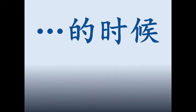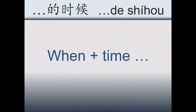This is HSK 2, lesson number 4, grammar point number 2. We're going to study the 的时候 expression in Chinese. When we are using 的时候, what we try to express is 'when' plus a time.